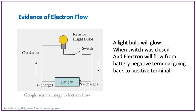One evidence that electron flow is shown in the simple circuit of a light bulb with a switch and a battery. Once the switch is turned on, the electron will flow from negative terminal of battery going to the positive terminal and it will make the light bulb glow. This is one evidence that there is a flow of electricity.